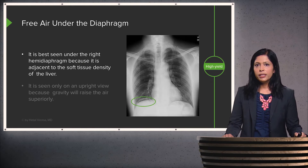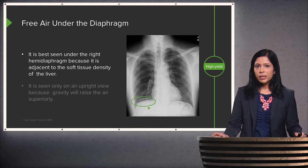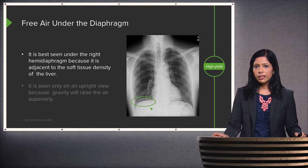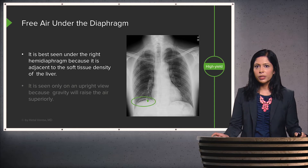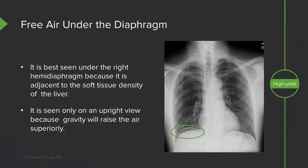On this upright chest X-ray, you can see free air under the right hemidiaphragm. This is visible because of the adjacent soft tissue density of the liver below. Adjacent to the liver's soft tissue density, any bit of air becomes visible. You can also differentiate it from the adjacent lung by seeing the line representing the diaphragm. This is really only seen on an upright view because gravity raises the air superiorly, placing it under the diaphragm.